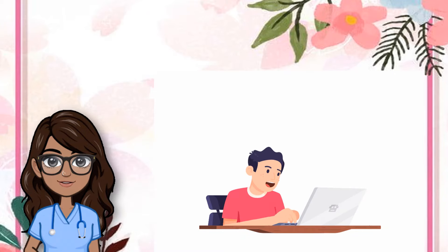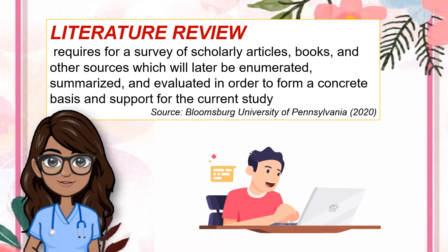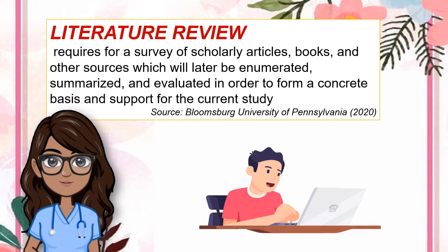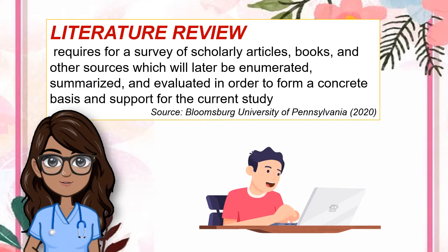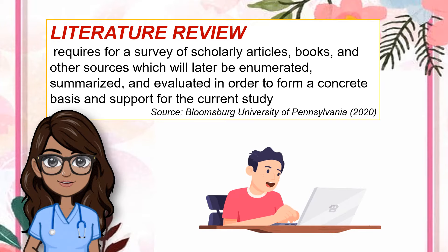Other previous researches related to the study currently conducted by a researcher should be put into consideration. When they are summarized comprehensively, this makes the process of literature review. As cited from Bloomsburg University of Pennsylvania in 2020, literature review requires a survey of scholarly articles, books, and other sources, which will later be enumerated, summarized, and evaluated in order to form a concrete basis and support for the current study. When done, the selected literature may appear in various sections of the study, such as in the introduction, related literature section, and the discussion of results.